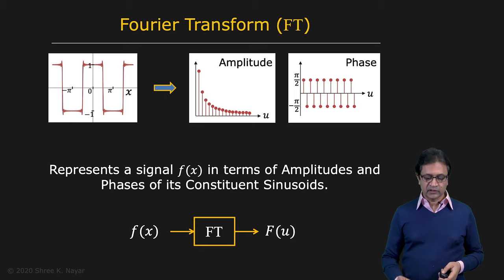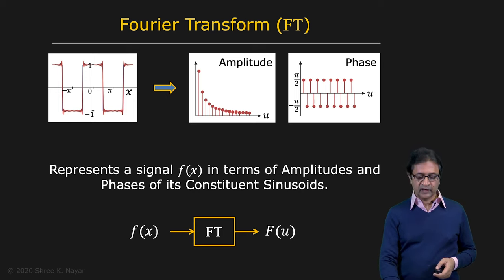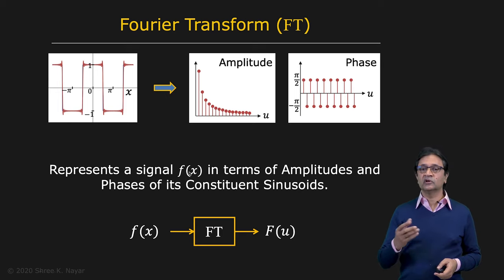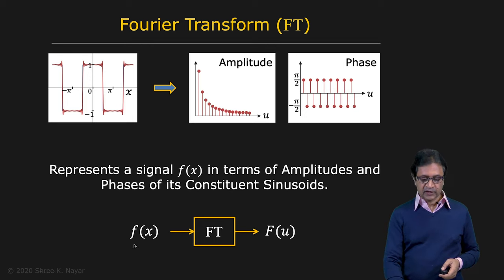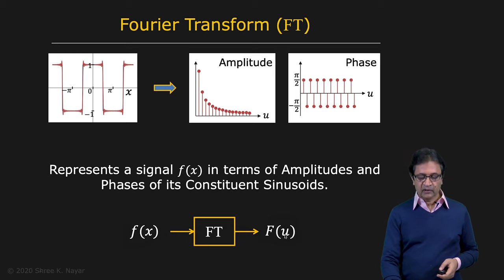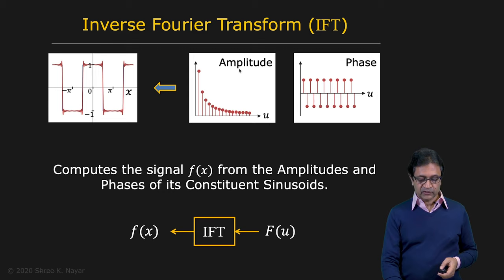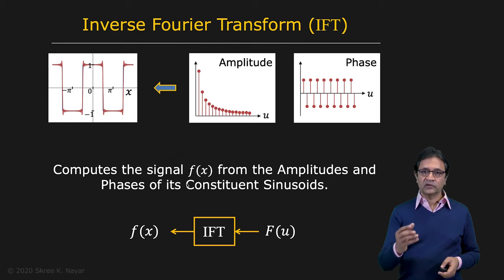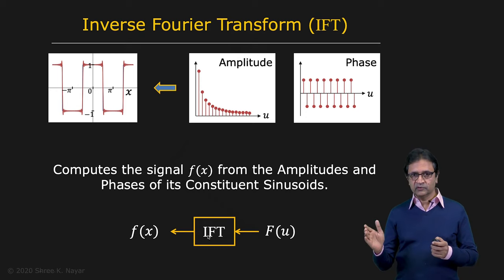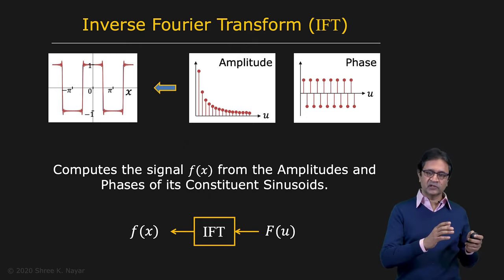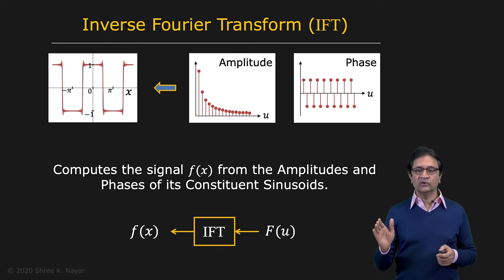We can now formalize this using the Fourier transform. The Fourier transform represents a signal f(x) in terms of amplitudes and phases of its constituent sinusoids. It takes you from f(x) to F(u), where F(u) for each u captures the amplitude and phase of the corresponding sinusoid of frequency u. Similarly, the inverse Fourier transform computes the spatial signal f(x) from those amplitudes and phases. Whether you go forward or backward, there is no loss of information.